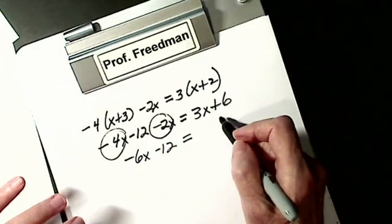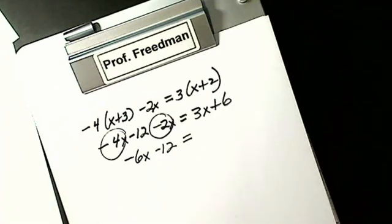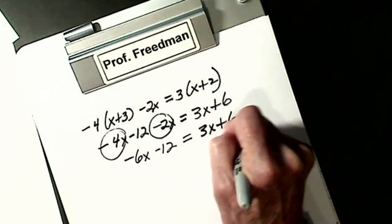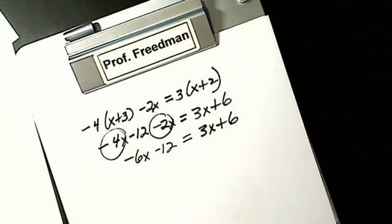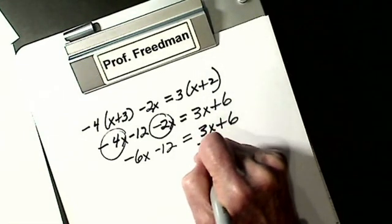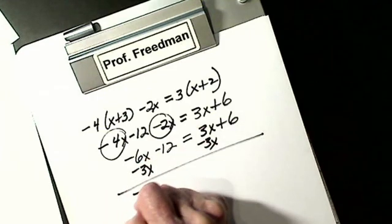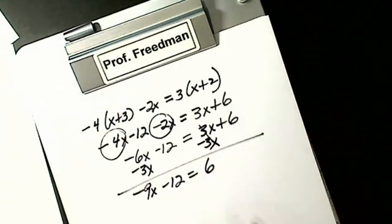I'm over here, I check, but there's nothing to combine. If there was, I would. So I get 3X plus 6. Step 1 is distributive property. Step 2, combine like terms on the same side of the equal sign. Step 3, I want all my X's on one side, so I'll subtract 3X, subtract 3X. I get negative 9X, negative 12 equals 6.